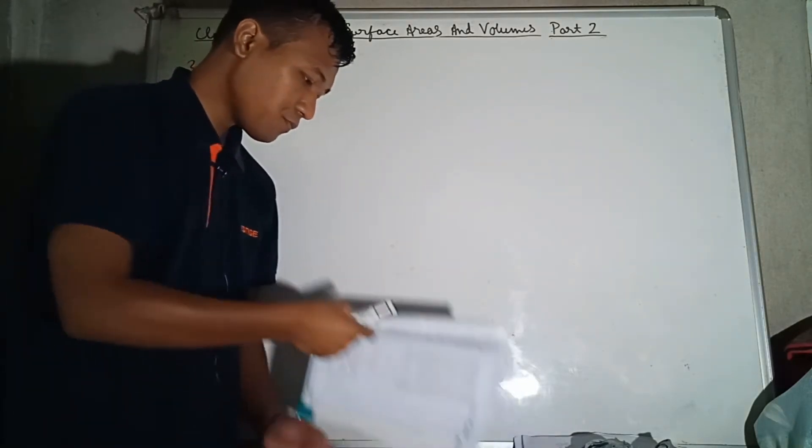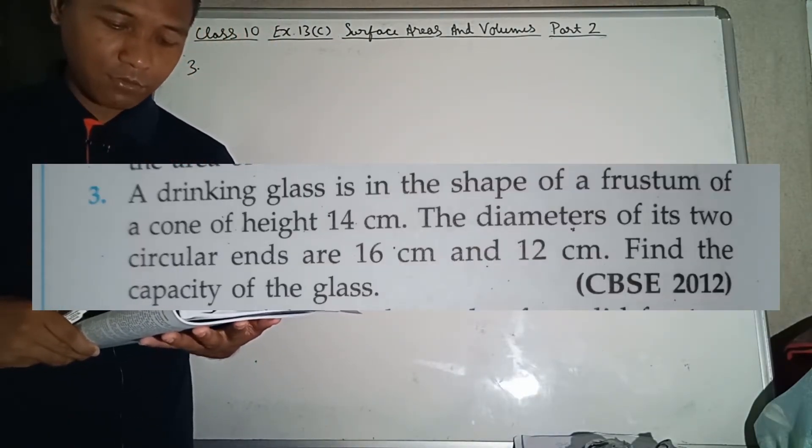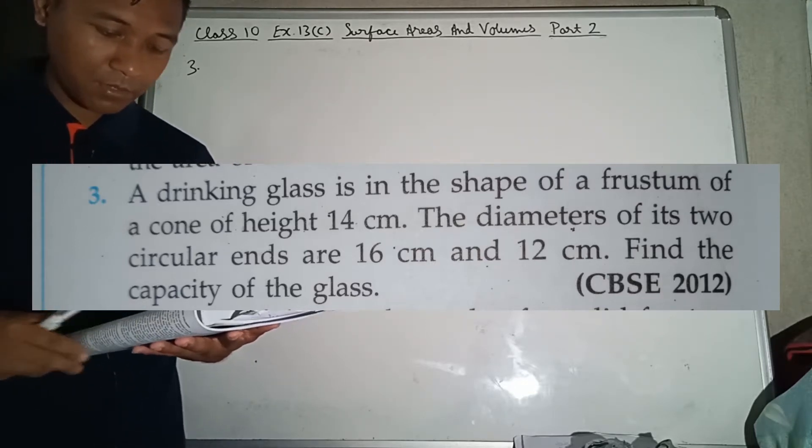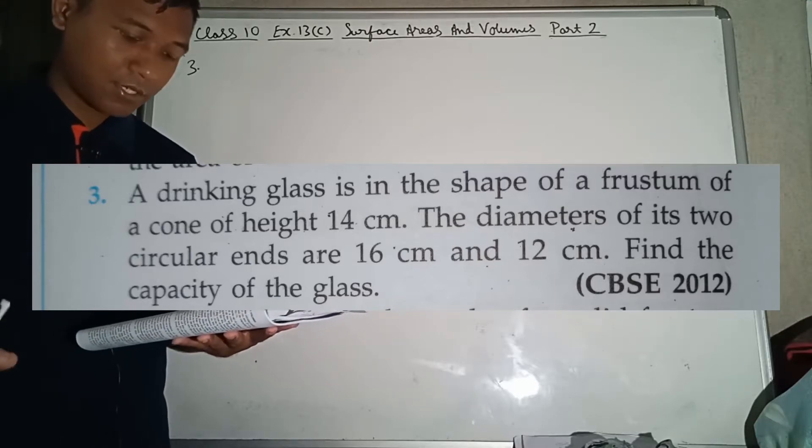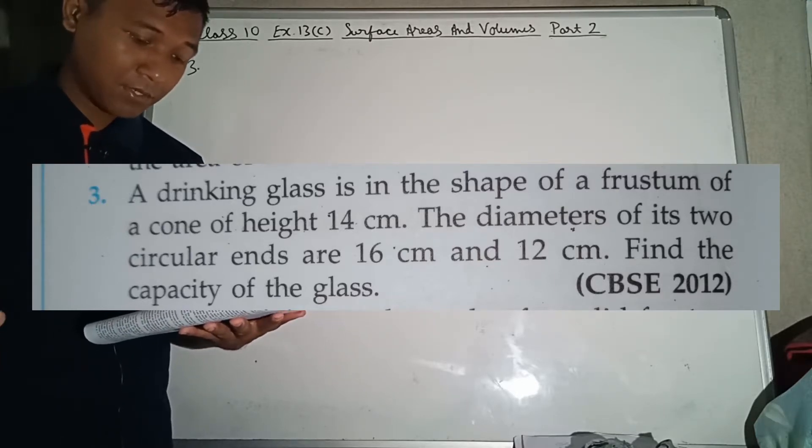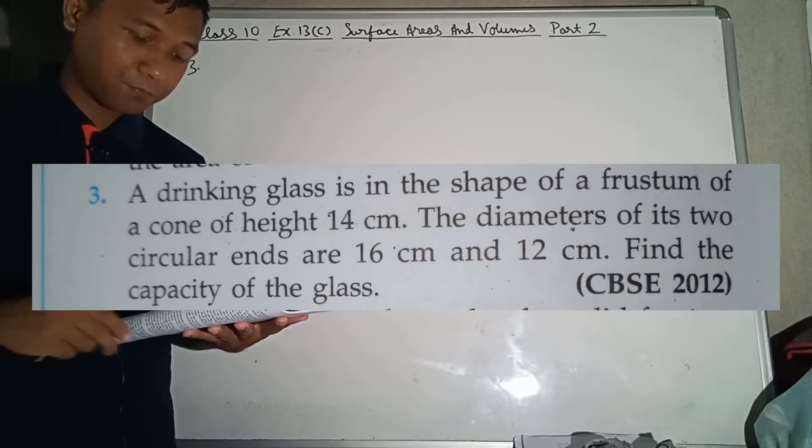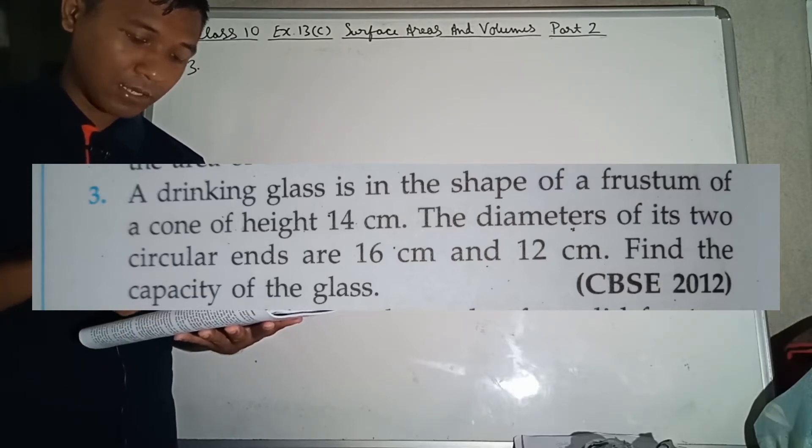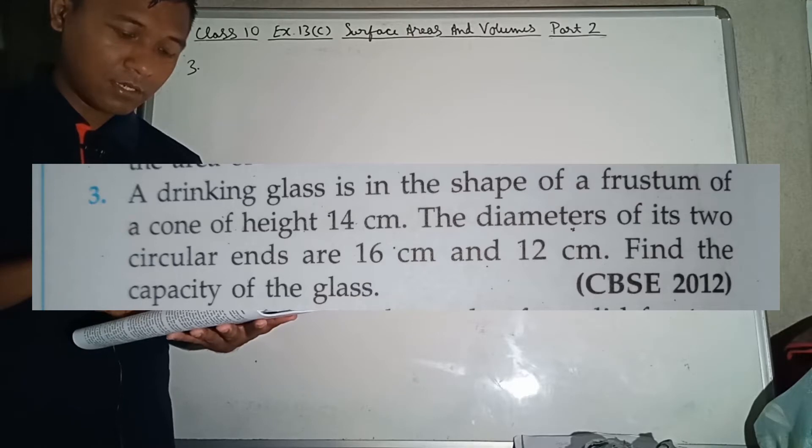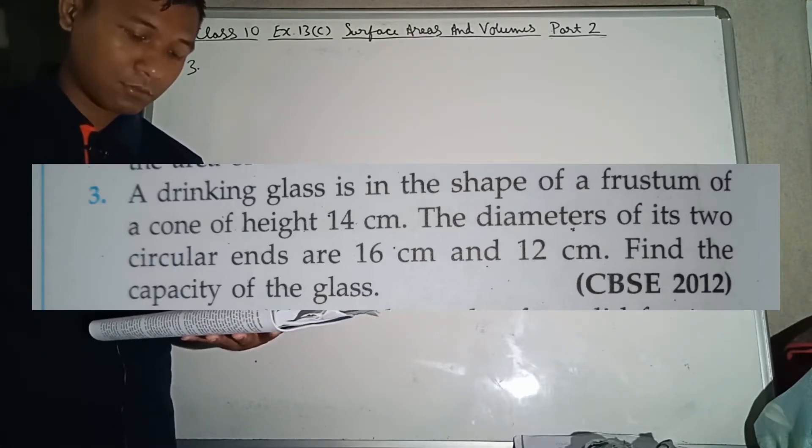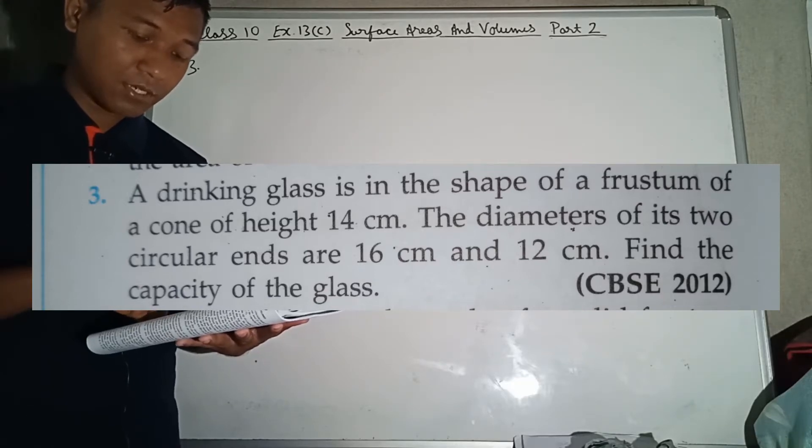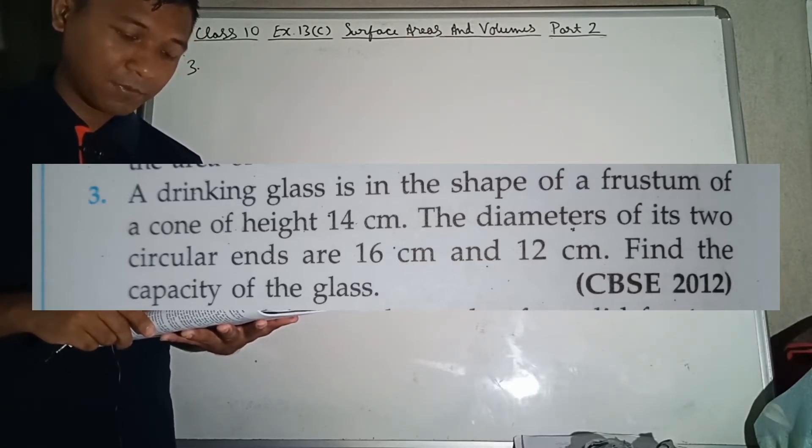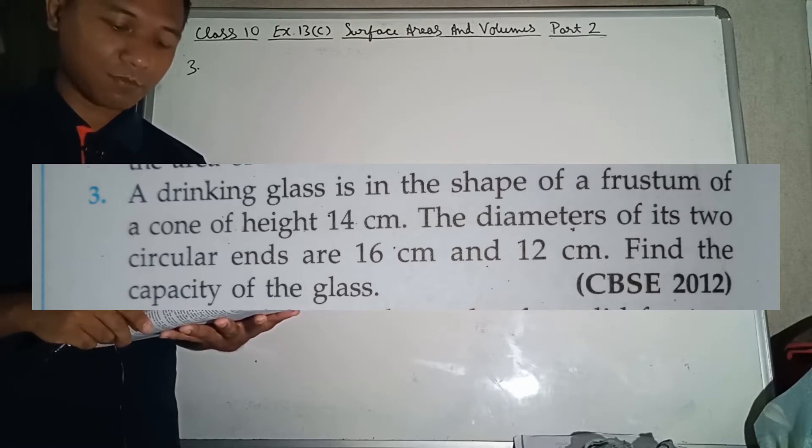Question number 3. A drinking glass is in the shape of a frustum of a cone of height 14 centimeter. The diameters of two circular ends are 16 centimeter and 12 centimeter. The diameter of bigger circle is 16 centimeter, diameter of smaller circle is 12 centimeters. Find the capacity of the glass.